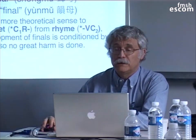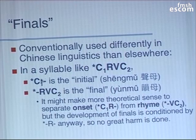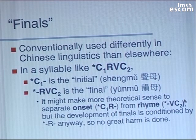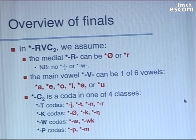In this situation, the C1 by itself is called the initial, and everything else is called the final. Some of what Laurent was telling you about this morning included this glide or whatever, but it really doesn't make a great deal of difference for our purposes. Personally, I think it makes better theoretic sense to split the syllable between onset and rhyme, but as I say, it doesn't change anything as far as I know.